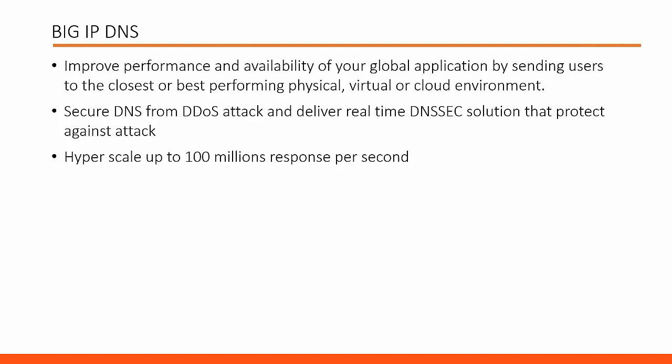DNS is the first place where every user hits to access your application, and then it gets the IP address and starts transferring and processing data. Big IP DNS works as a DNS server and uses its intelligence to find the available and best performing resources, helping users access the best performing server. Securing a service is more inevitable than anything. Big IP DNS can secure DNS from DDoS attacks and deliver real-time DNS security solutions that protect against attacks.